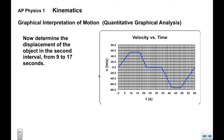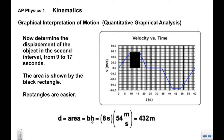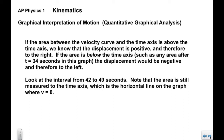For the second interval, 9 to 17 seconds, the area is a rectangle — base times height. The base is 8 seconds, and using the height from the scale, the object moved 432 meters to the right. If the area between the velocity curve and the time axis is above the time axis, displacement is positive and the object moves right. If the area is below the time axis — as in any interval after 34 seconds — displacement is negative and the object moves to the left.